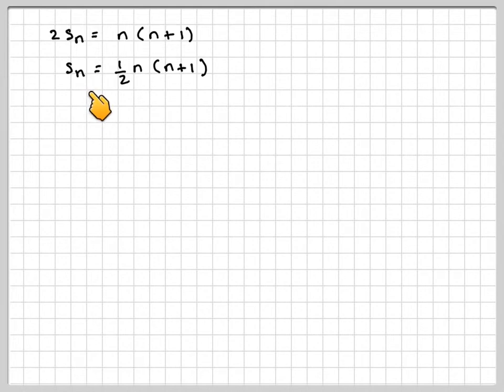So the sum of the first n positive integers is going to be a half times n times n plus 1.